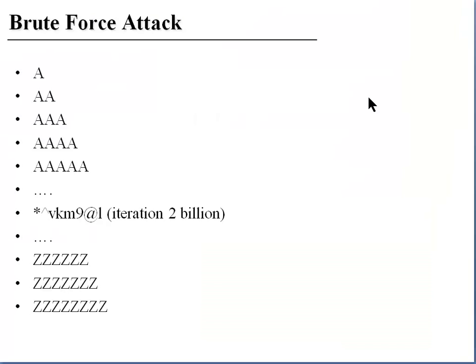In contrast, a brute force attack takes every combination of uppercase, lowercase, numbers, and special characters, creates all permutations and combinations, hashes them, and then compares the result against the hash of the user's password — starting at 'A', 'AA', and so on until every conceivable permutation is tried. A dictionary attack is limited by the size of the dictionary, whereas a brute force attack can take days, years, and maybe even centuries, depending on the length of the password.